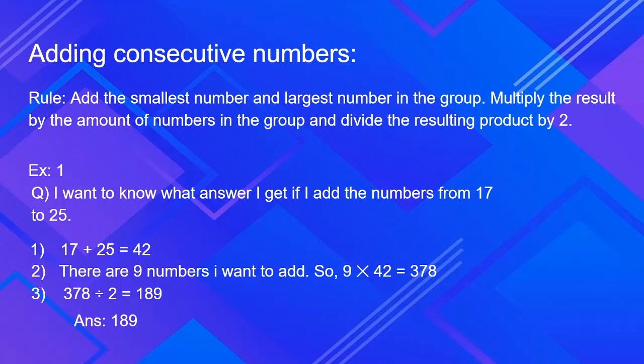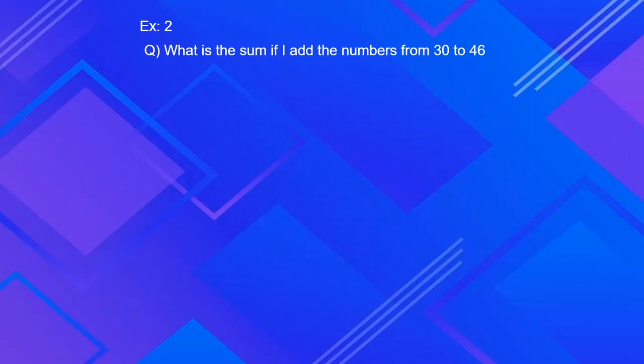Let's look at a few more examples. What is the sum if I add the numbers from 30 to 46? First we add the lowest number and the highest number. So 30 plus 46 is 76.